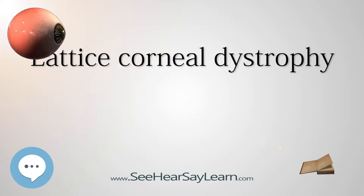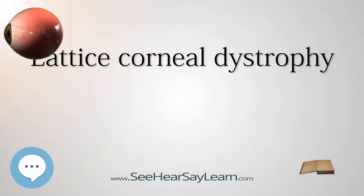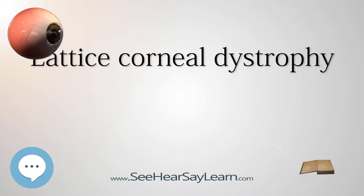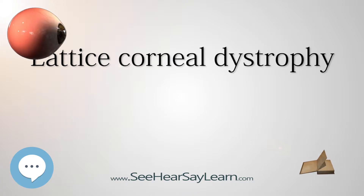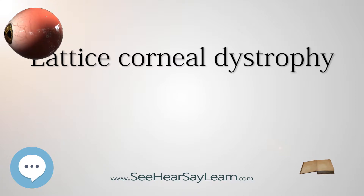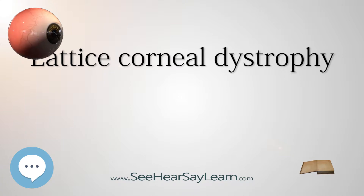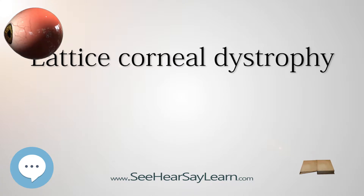Lattice corneal dystrophy has two types. Type I has no systemic association. It is caused by mutations in the TGFBI gene encoding keratoepithelin, which maps to chromosome 5q31. Type II, or Finnish type amyloidosis, is associated with manifestations of systemic amyloidosis due to accumulation of gelsolin.